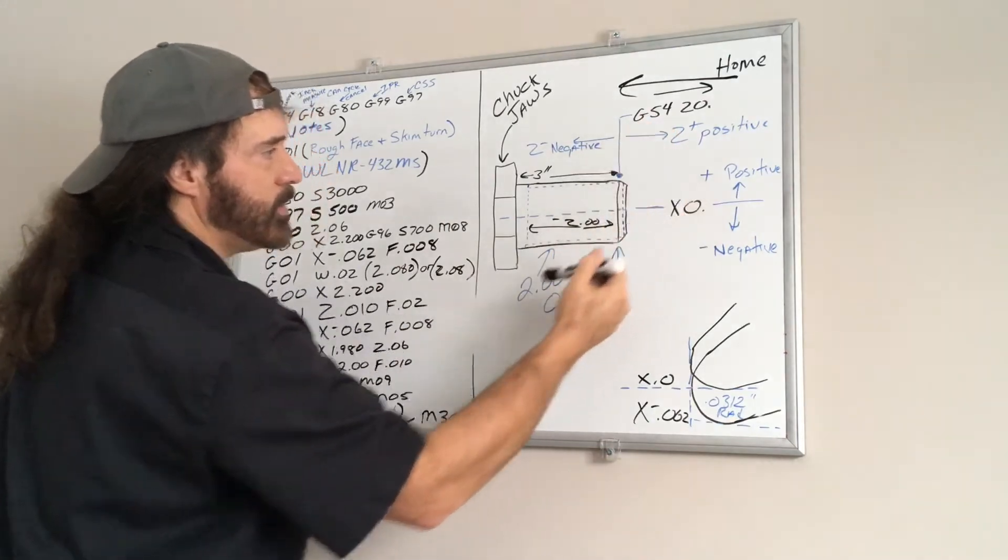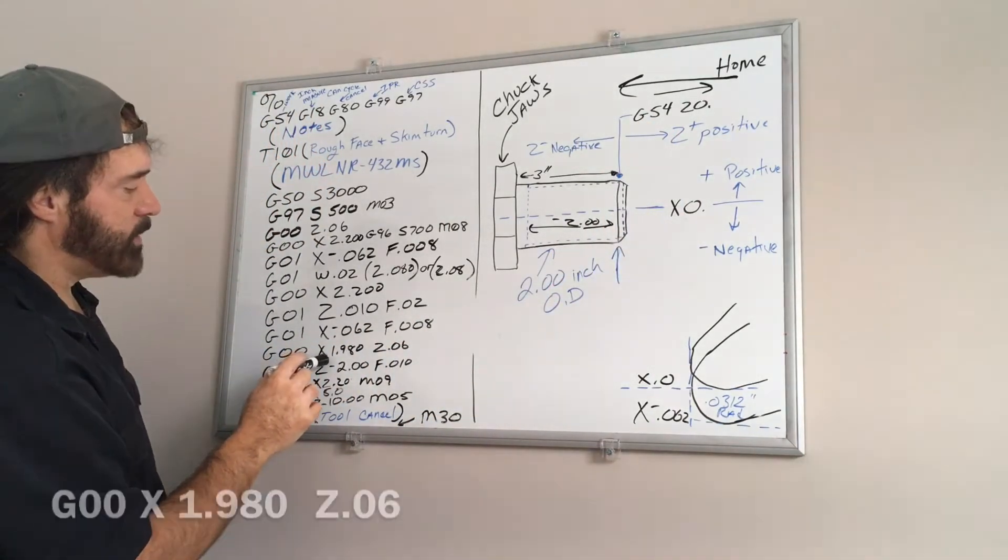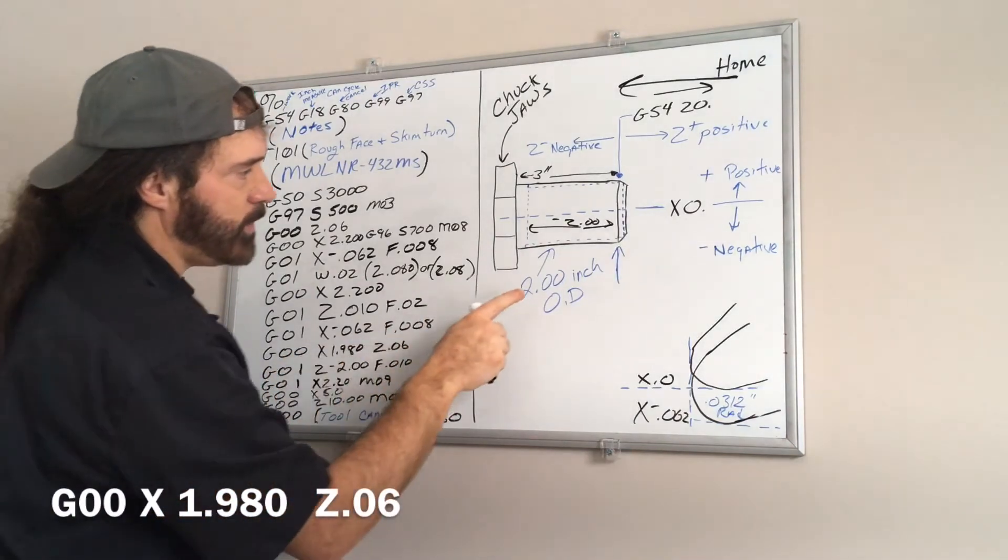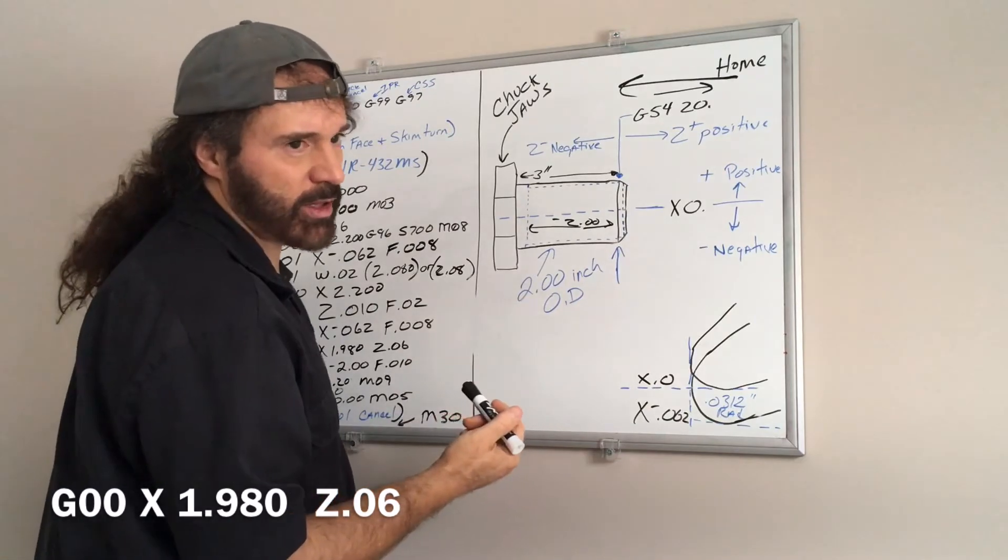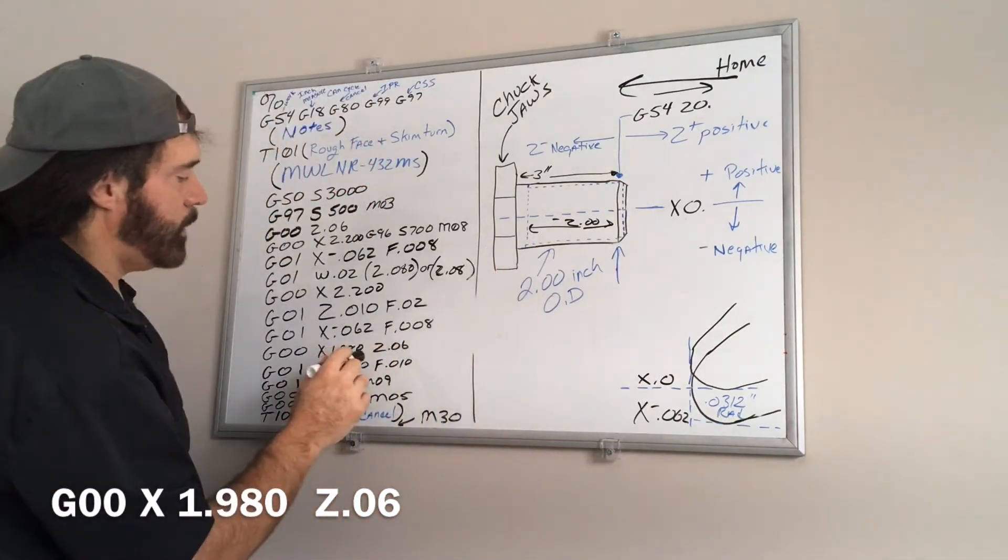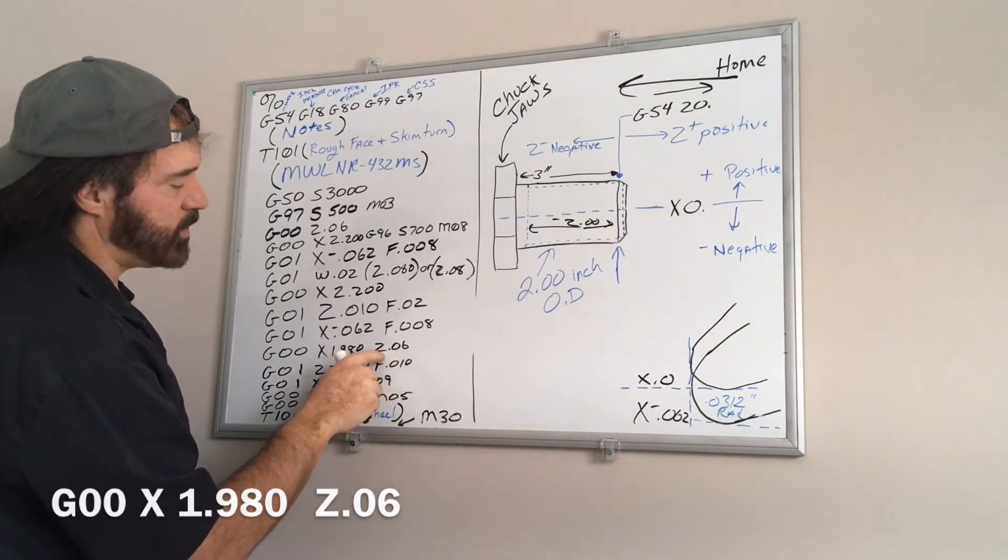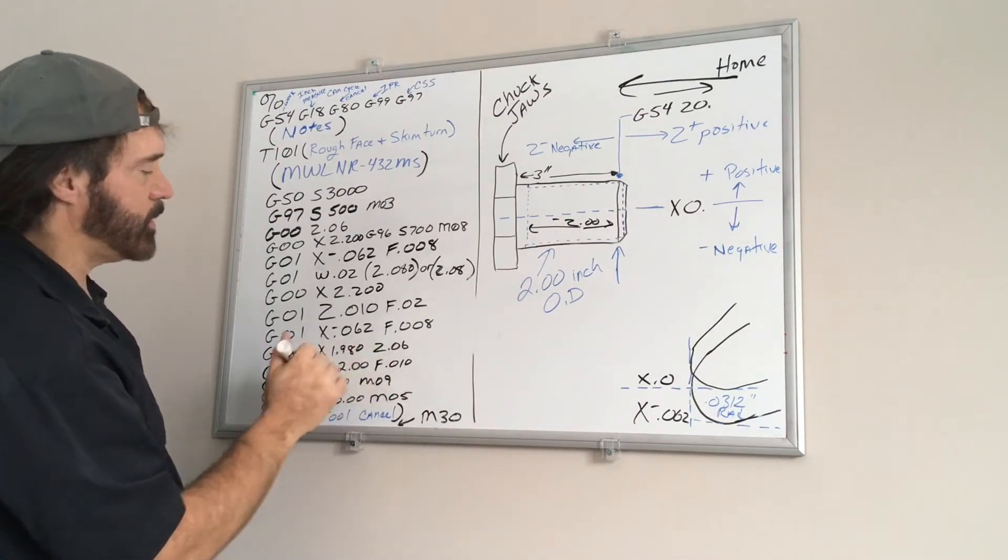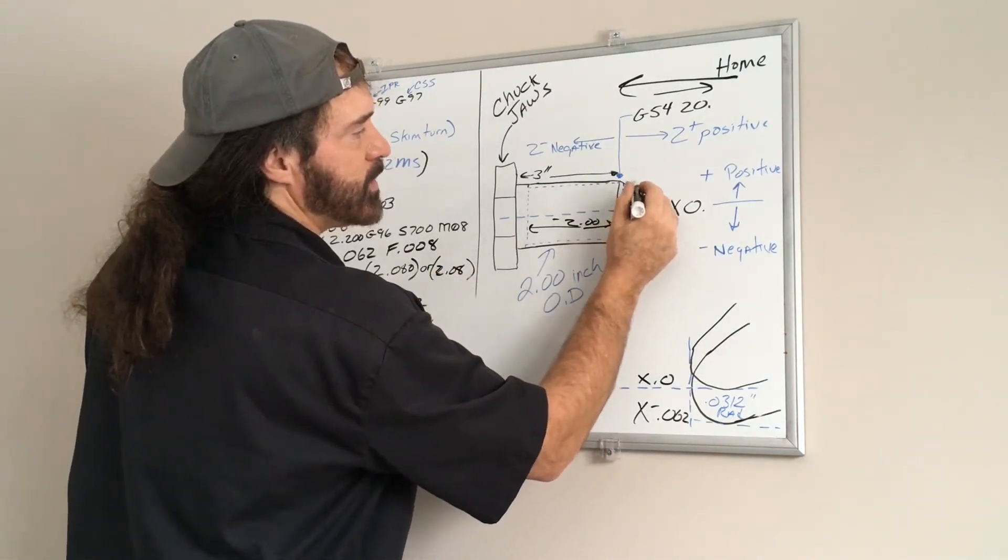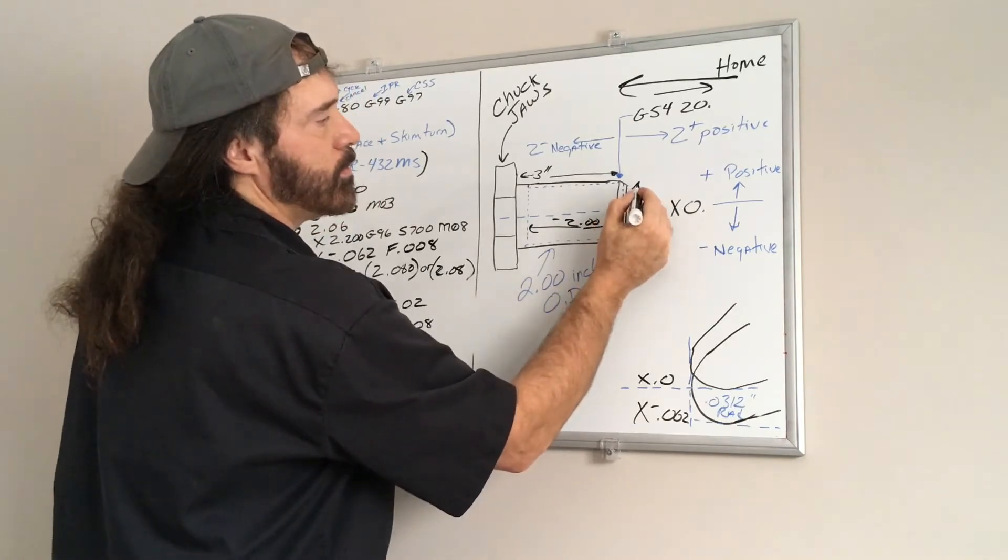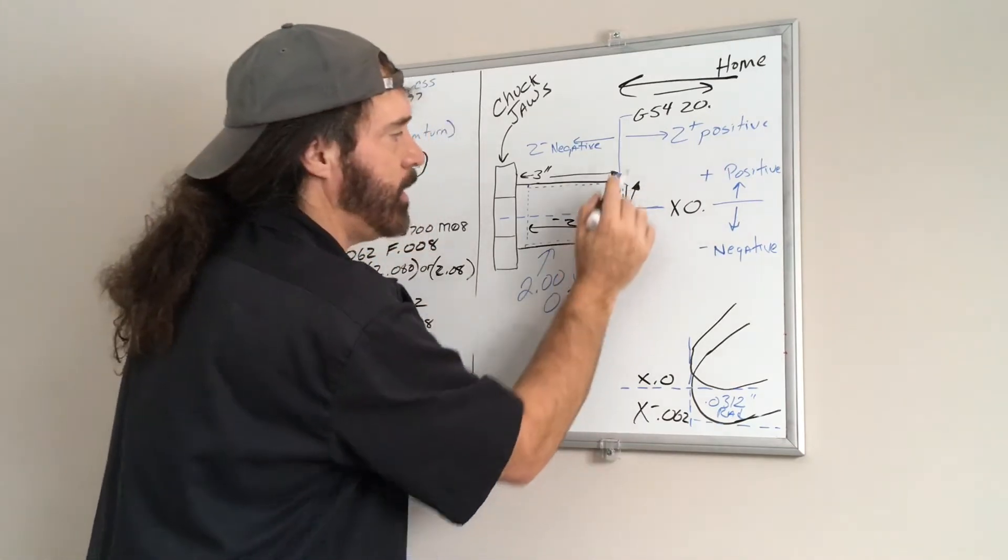Now I want to rapid it up to a dimension of X 1.980, which means since the stock is 2 inches in diameter, I'm taking a 20 thousandths cut off the OD. And I'm going to go to a dimension almost a sixteenth of an inch in front of the part, so Z 0.06. So in theory this is I'm coming up just like this on an angle. Oops, I'm rapiding up on an angle since I did my two faces.